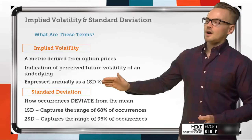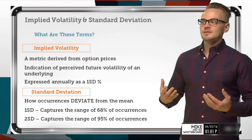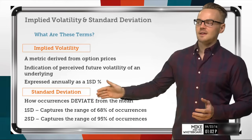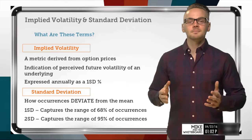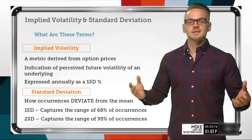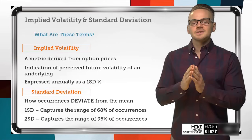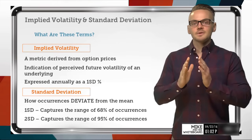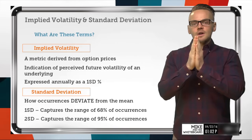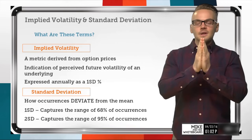So what are these standard deviation values that we keep referring to? Well, standard deviation is really just how occurrences deviate from the mean of the occurrences. If I've got 10,000 occurrences that I've randomized through that same exact stock, we're usually going to see a lot of smaller movements — a bell curve where a lot of the smaller movements occur just around that $50 strike, maybe $49 to $51.